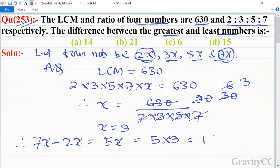This equals 5×3 = 15, which is the required answer. So option D is the correct answer.